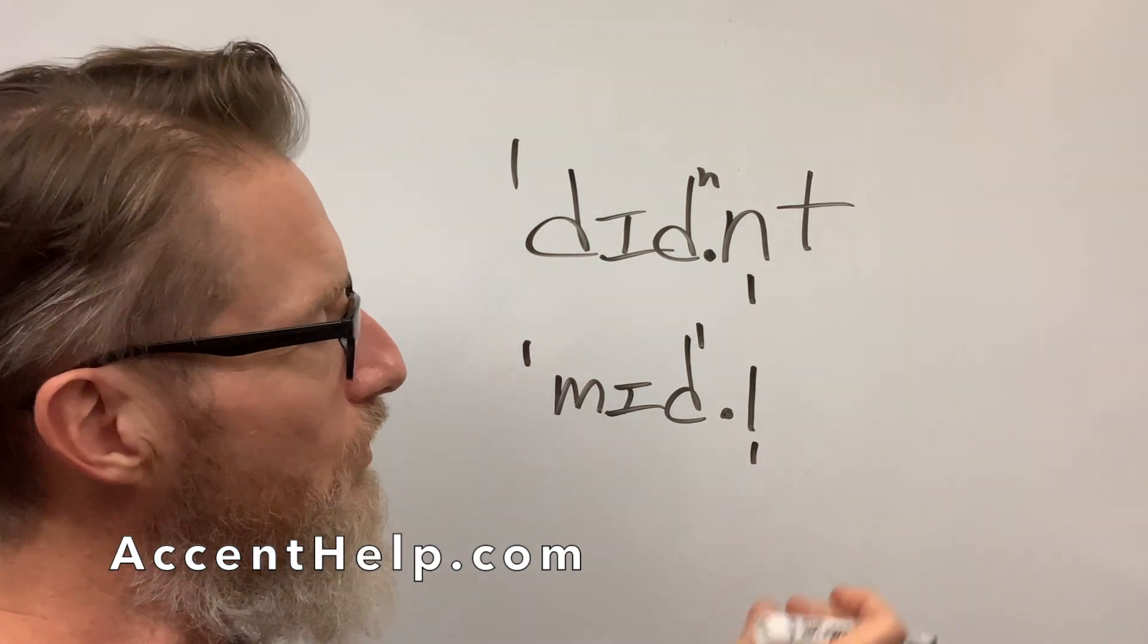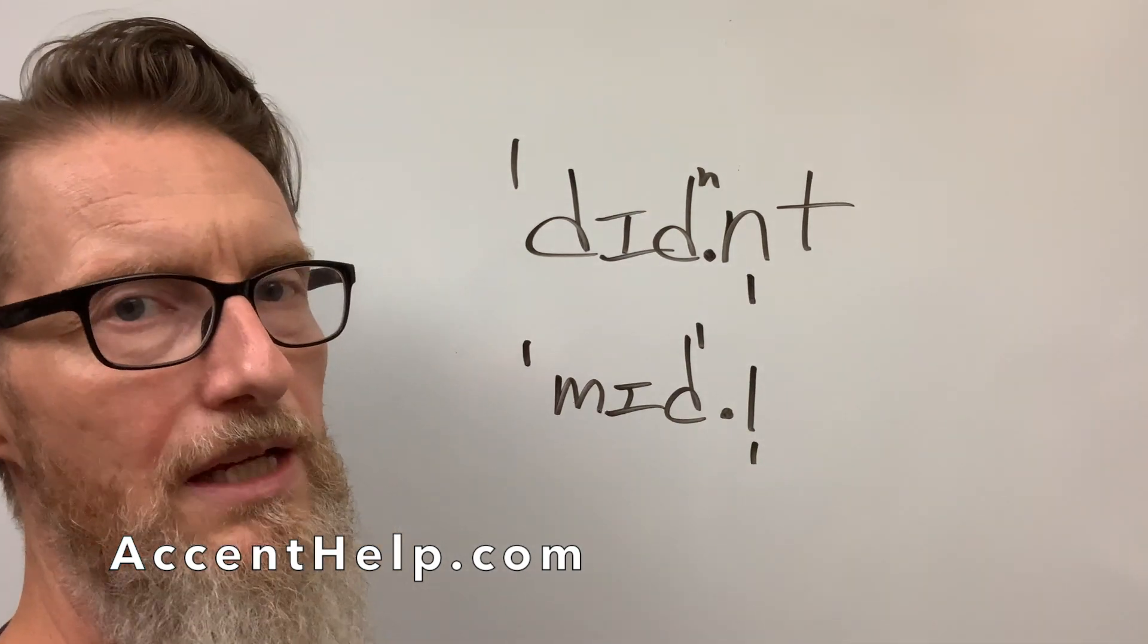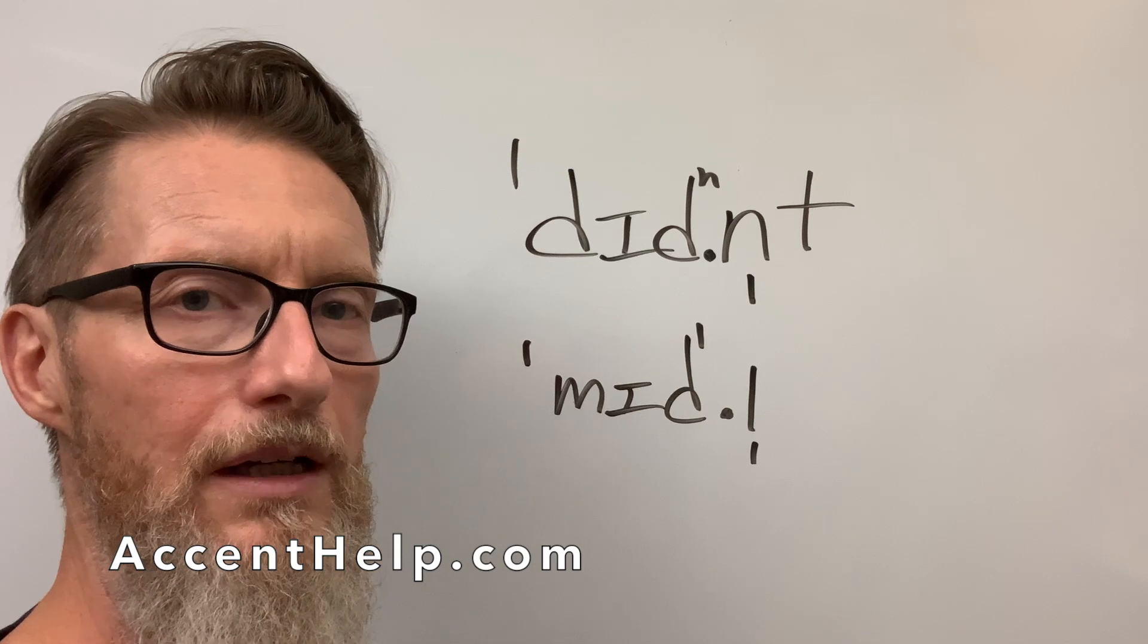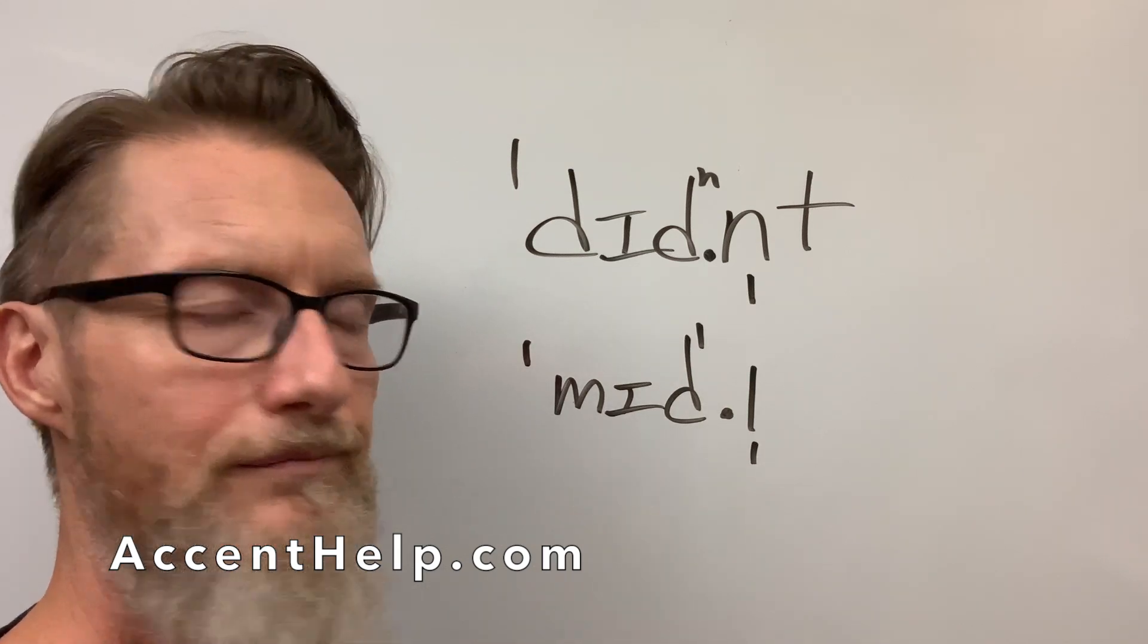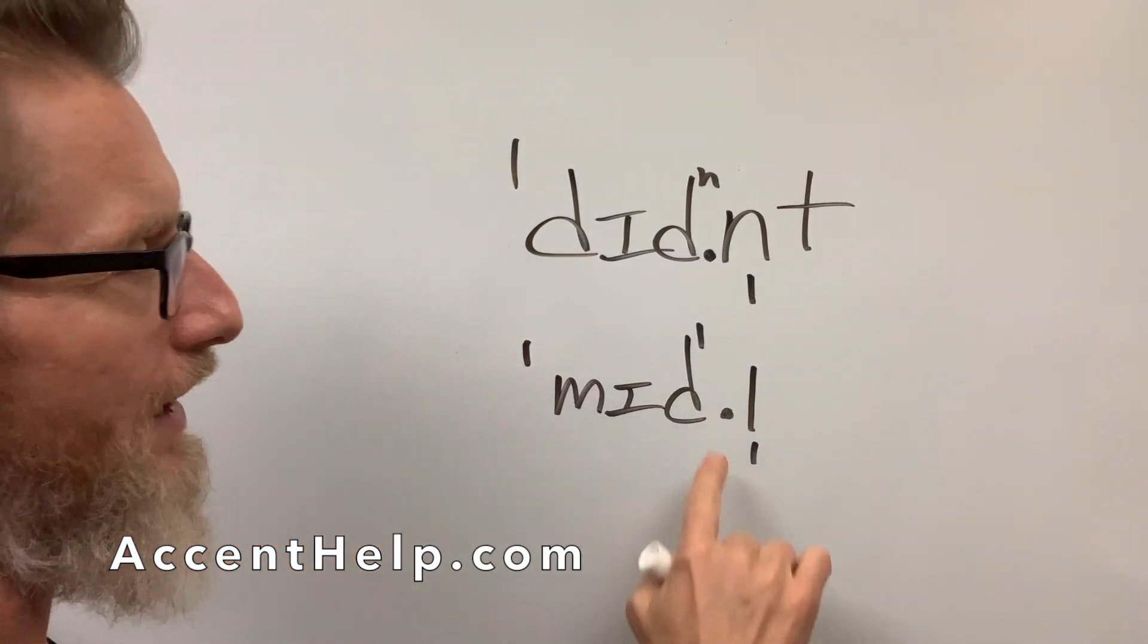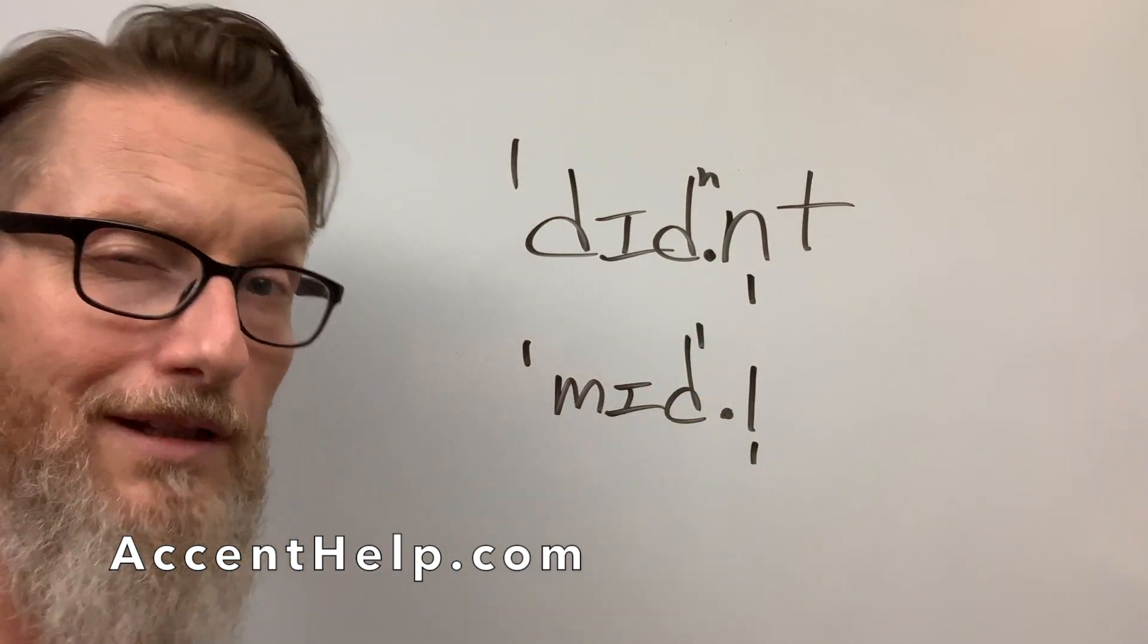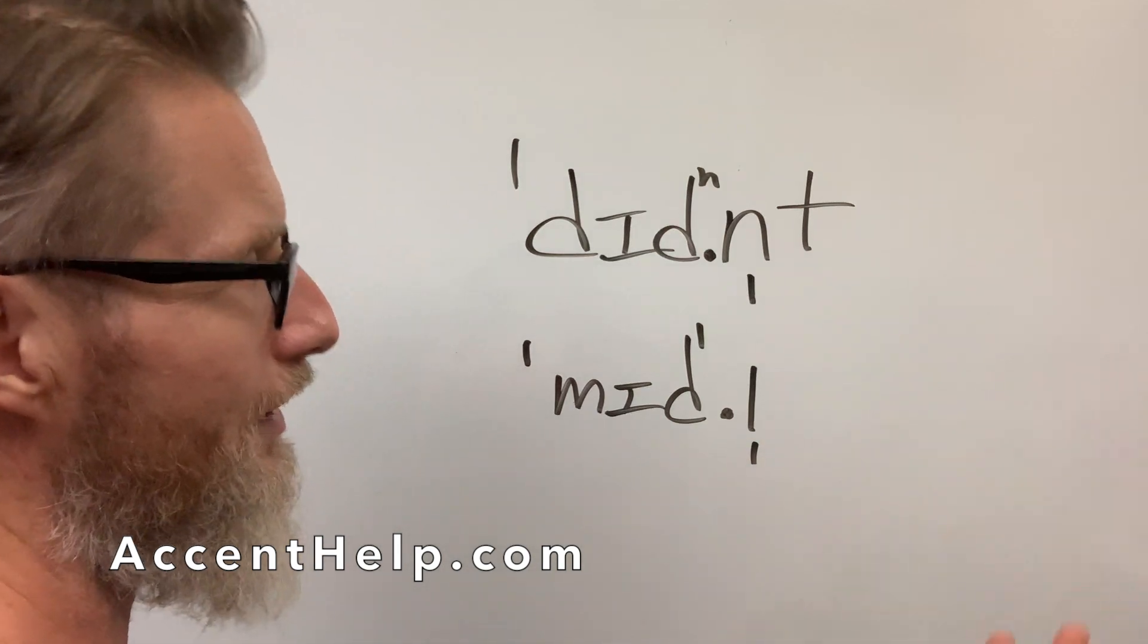So this is the symbol that you could use, that syllabic symbol, to mean that I know there's not a vowel there, but it's a syllable. Now I got to say, I'm already kind of telling you that because I'm putting a dot there, which is a syllable break. So I'm already telling you there's a syllable break there.